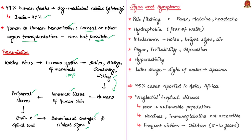Symptoms of human rabies infection include pain or itching at the bite wound site, followed by fever, malaise and headache lasting two to four days. Patients also experience hydrophobia — fear of water — and intolerance to noise, bright light, or air. Affected individuals may suffer from anger, irritability and depression, showing a lot of hyperactivity.